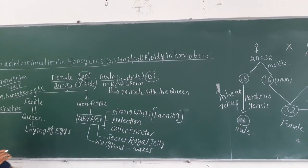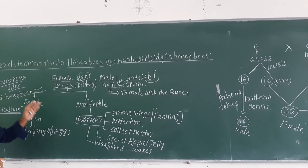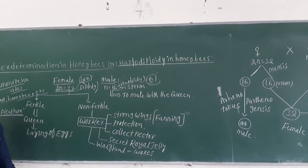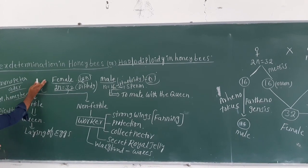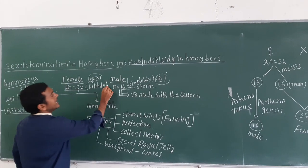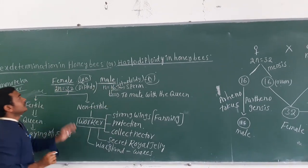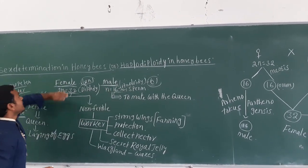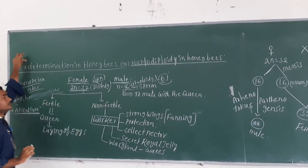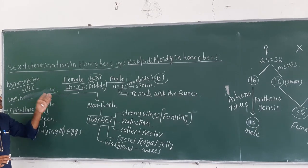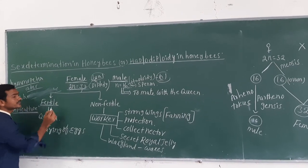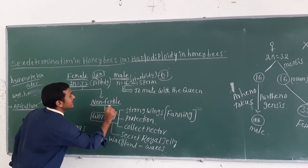Before explaining sex determination in bees, there are three types of bees in a colony. The female has 32 chromosomes and the male has 16 chromosomes. Females are further divided into two types: the fertile one and the non-fertile one.